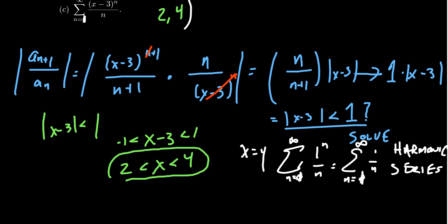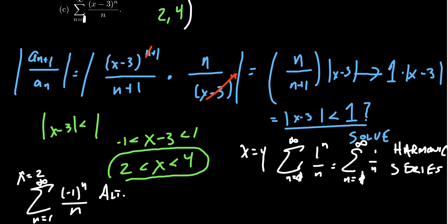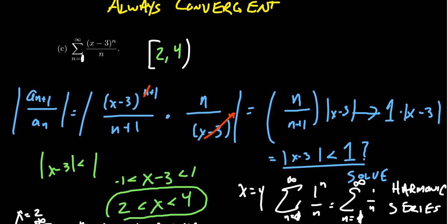So the domain of this function — this power series — is the interval from 2 to 4, where 2 is included and 4 is omitted. We are convergent for all numbers between 2 and 4, including 2 but not 4 itself.